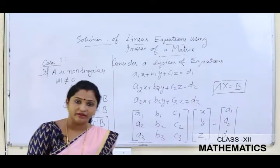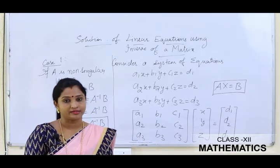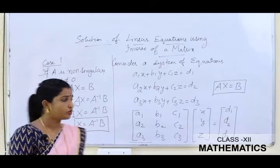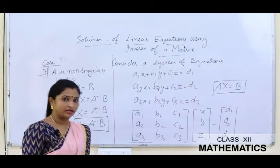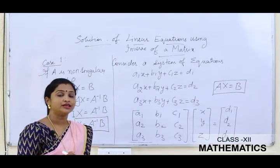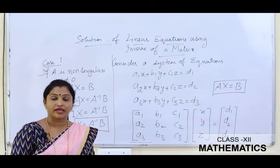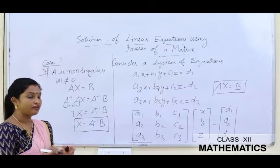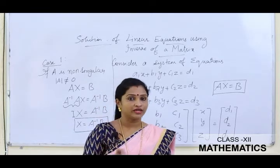In your exam questions, you will first calculate the determinant of A and check that it is not equal to zero — which it definitely will be. Then you write X = A⁻¹B. To find A inverse, you find the cofactors, transpose them to get the adjoint, then use the formula A⁻¹ = (1/det(A)) × adj(A). After finding A inverse, multiply by B to get the values of x, y, and z.